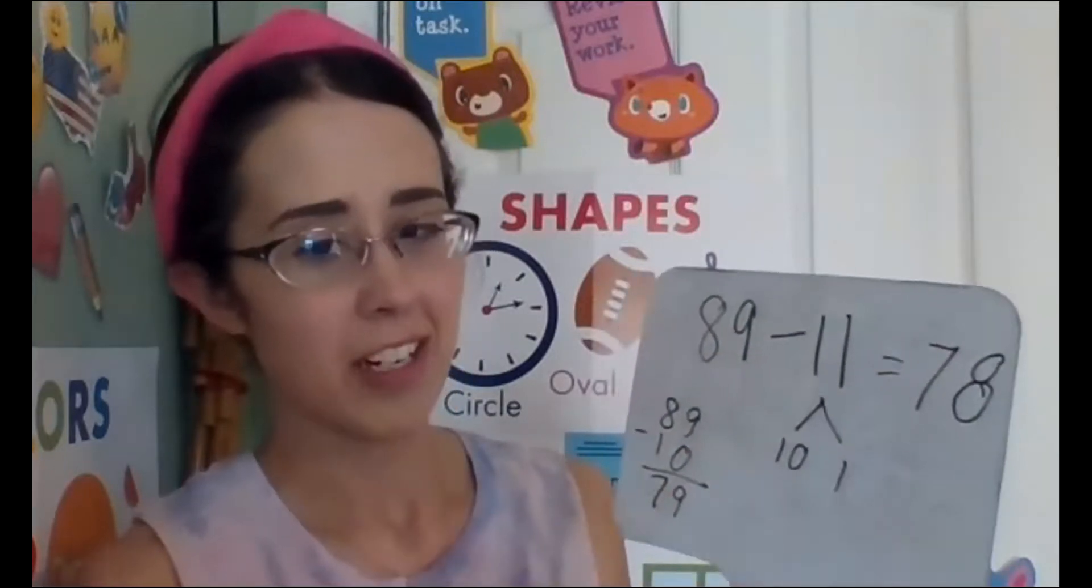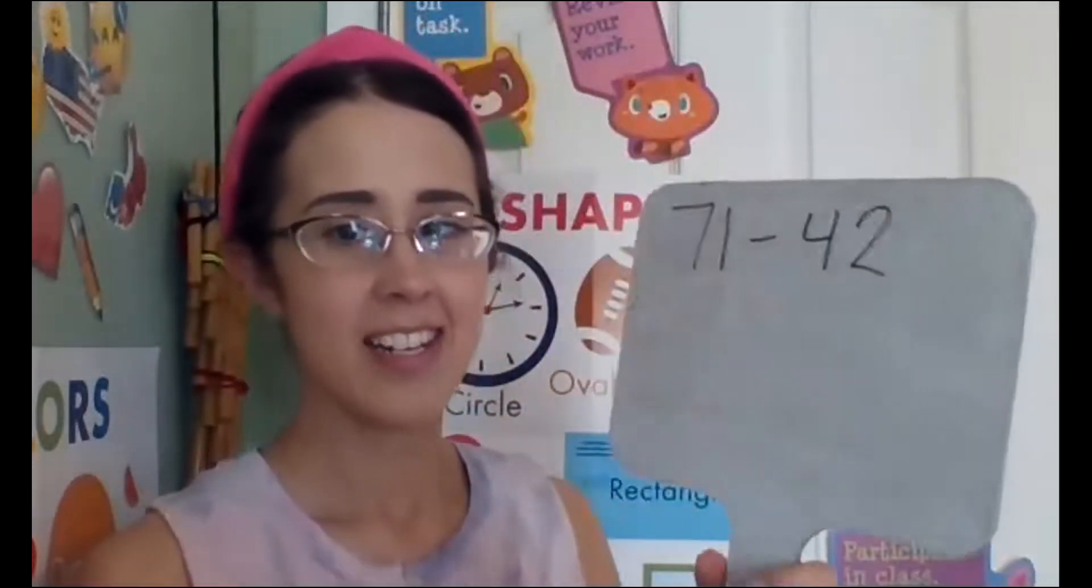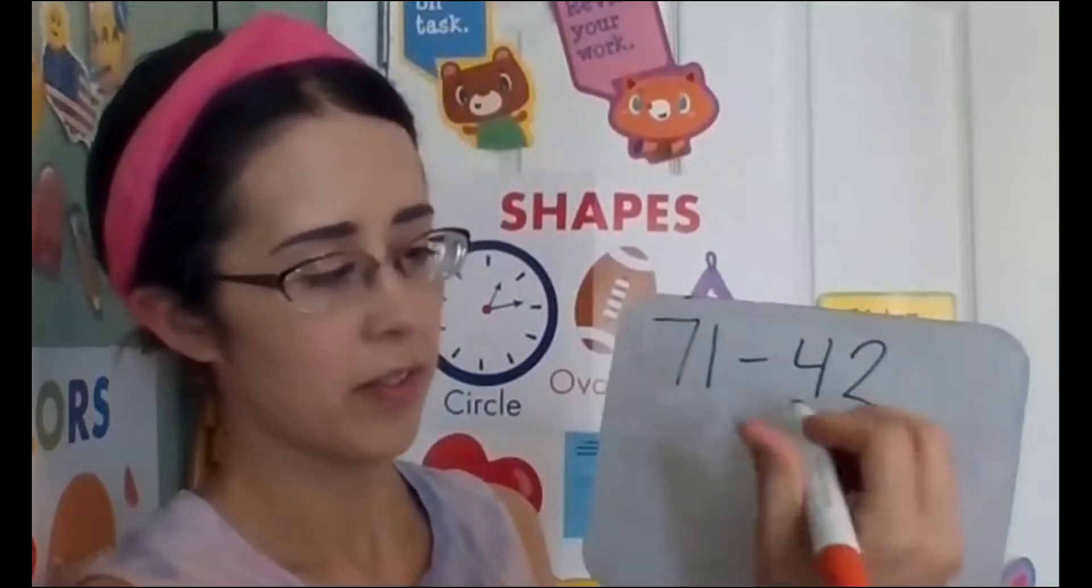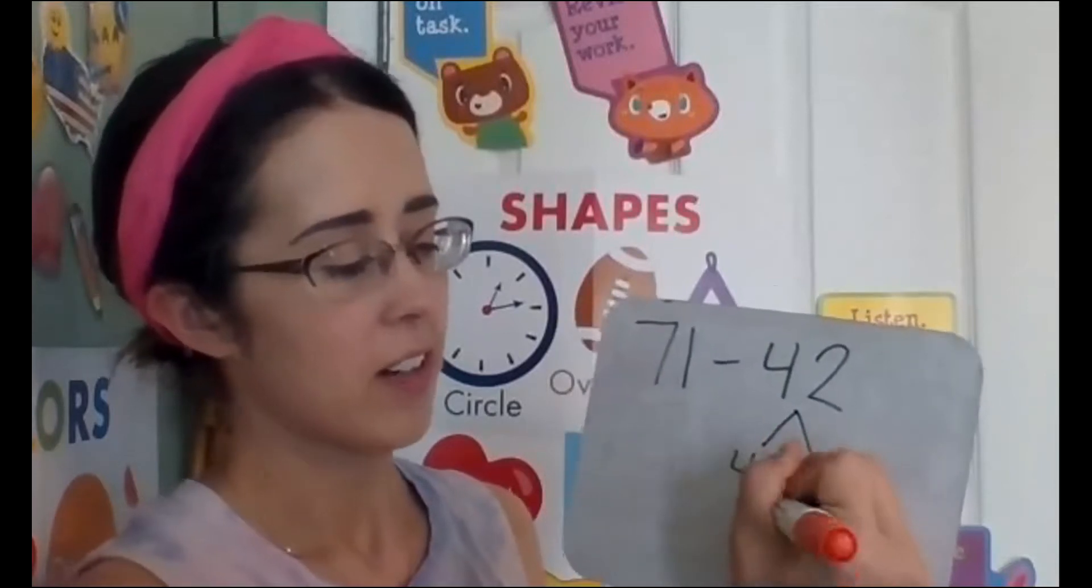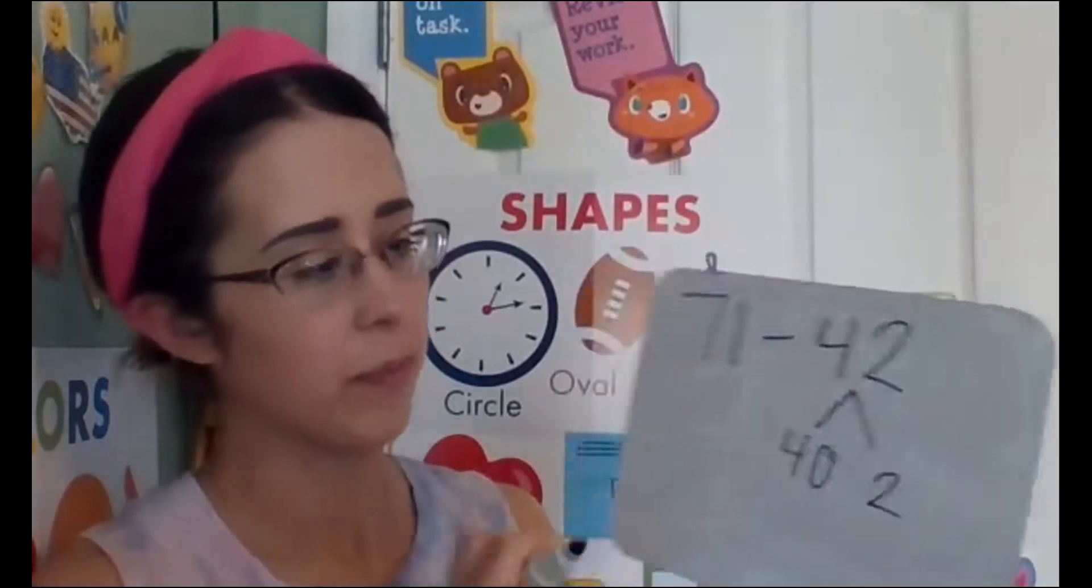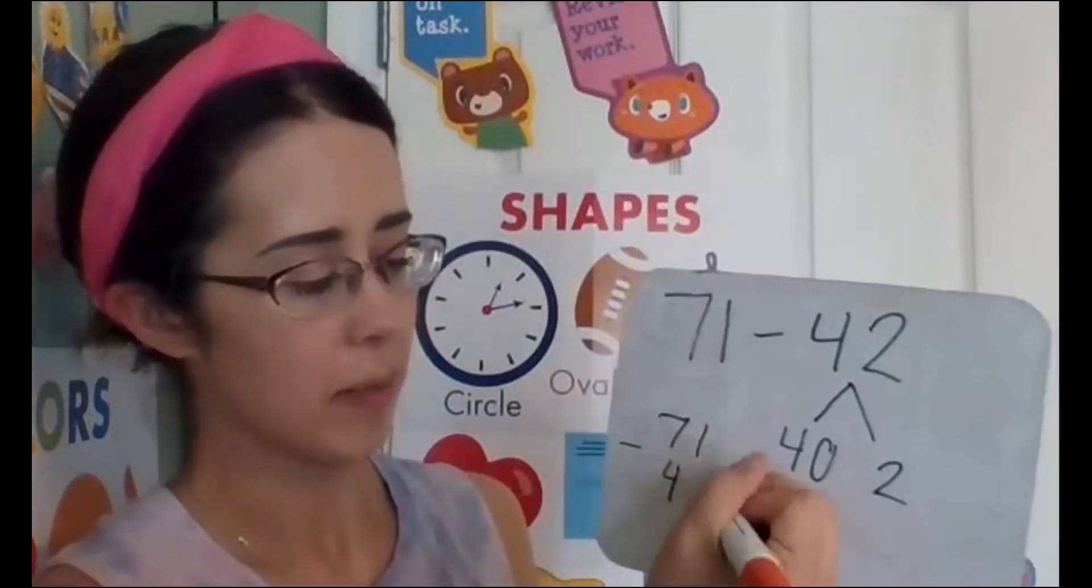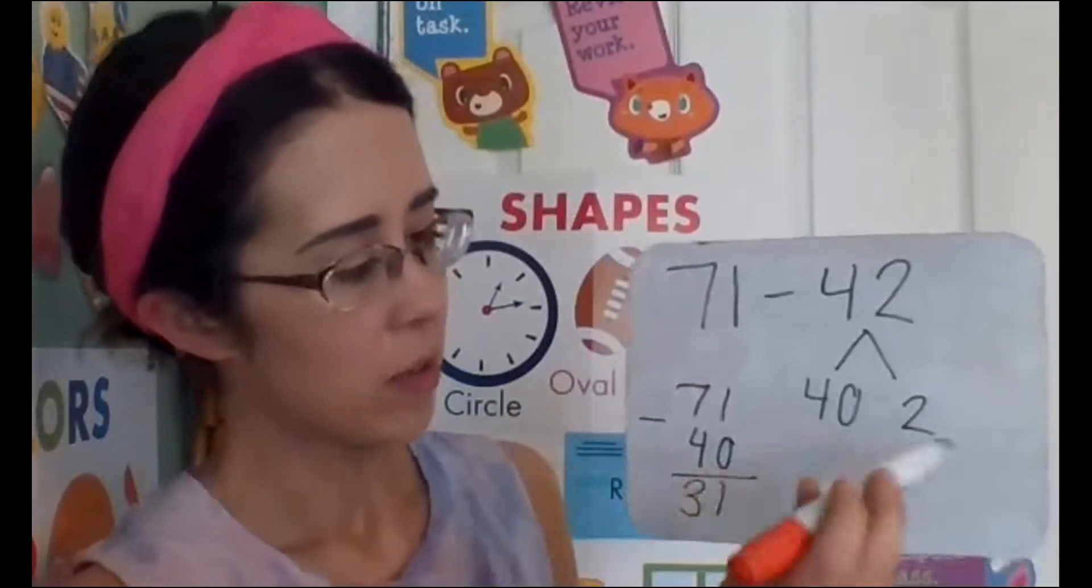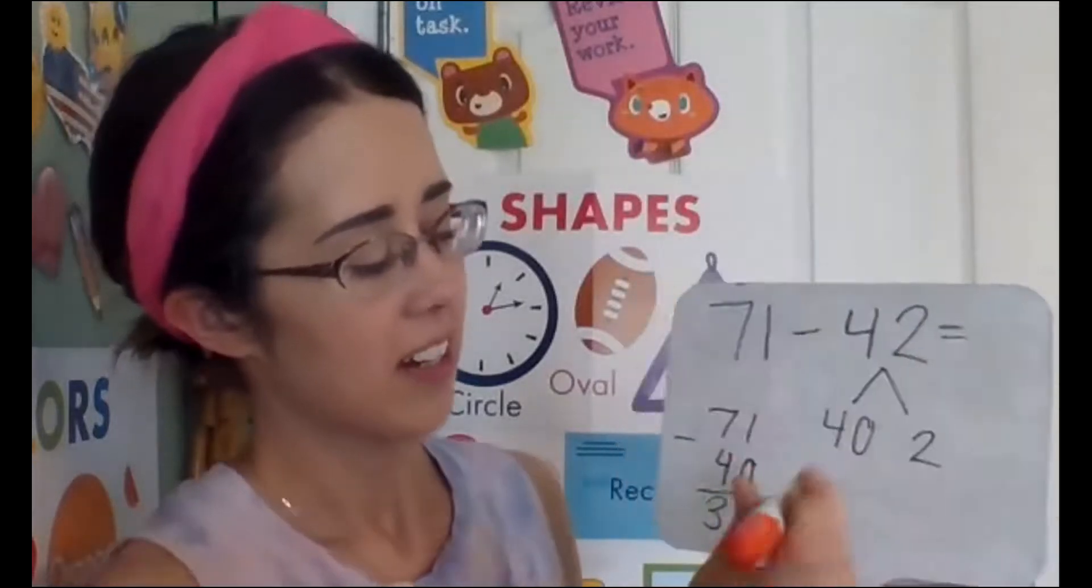Let's try one more to make sure we understand how to use friendly numbers. Remember friendly numbers end in zero. If I would like to subtract 42, make 42 into a friendlier number. 40 plus 2 makes 42. It's much easier to subtract 40 from 71, and I get 31. Before we do that, let's check our work on a 100 chart.